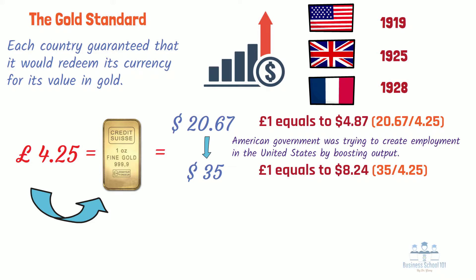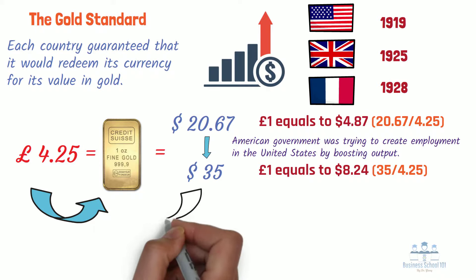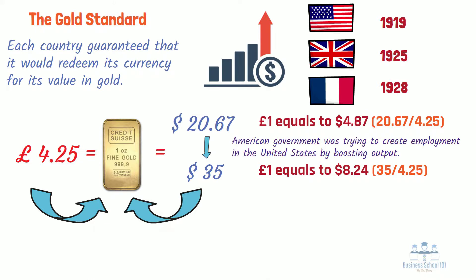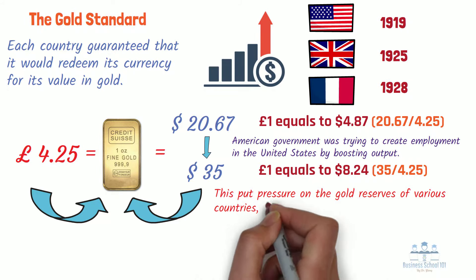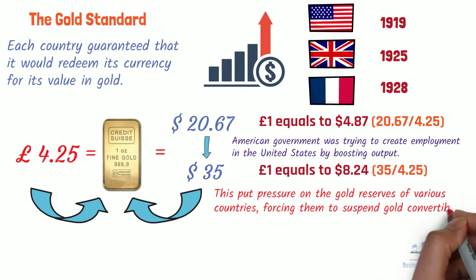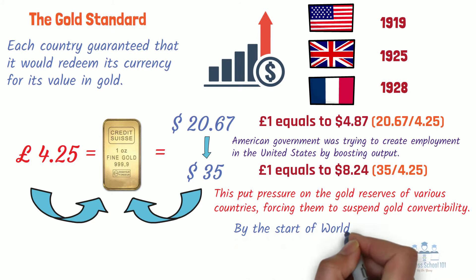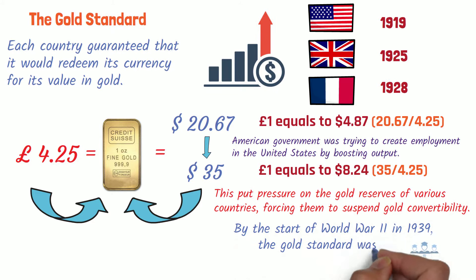With countries devaluing their currencies at will, one could no longer be certain how much gold a currency could buy. Instead of holding on to another country's currency, people often tried to change it into gold immediately, lest the country devalue its currency in the intervening period. This put pressure on the gold reserves of various countries, forcing them to suspend gold convertibility. By the start of World War II in 1939, the gold standard was dead.